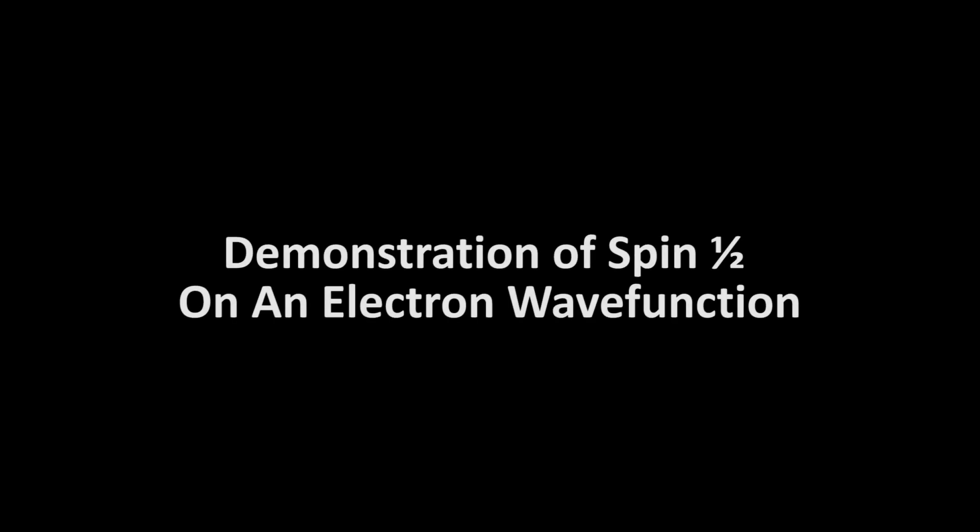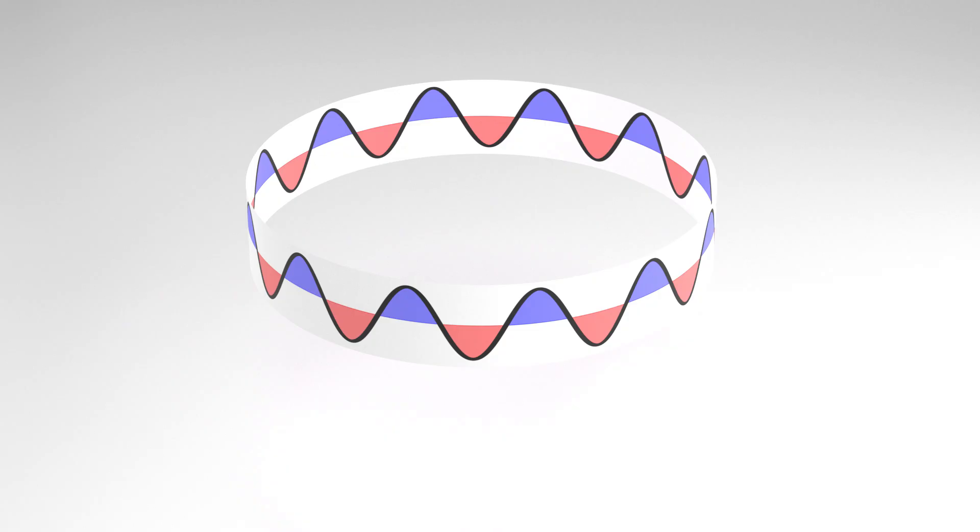This is a demonstration of spin 1/2 applied to a continuous electron wave function. Here we have the real part of an electron wave function with 12 wave cycles wrapped into a continuous loop.